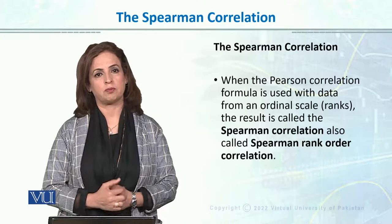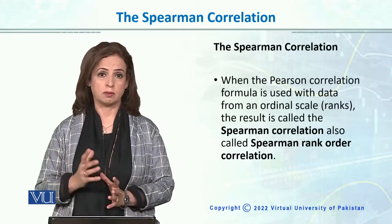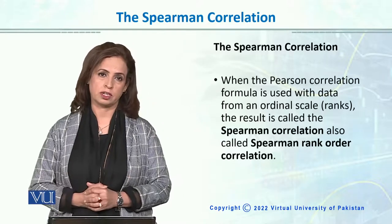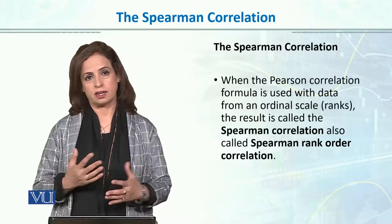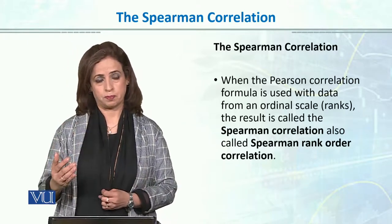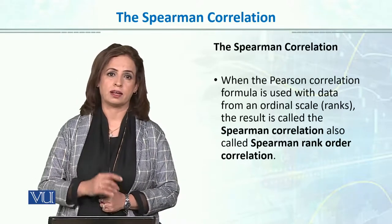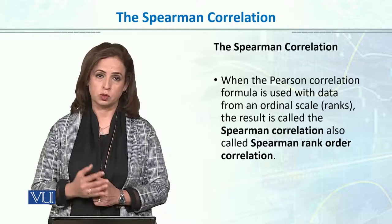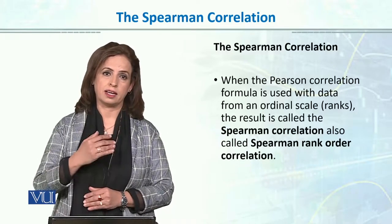Spearman Correlation is very similar, and almost all commands are similar to Pearson Product Moment Correlation, but the difference is the level of scale. In Pearson, we use a quantitative scale with running scores, but in Spearman, the scale is ordinal and data is in rank orders.